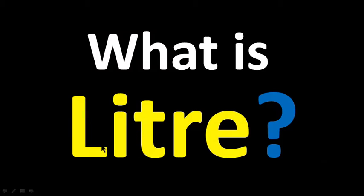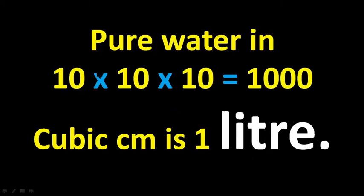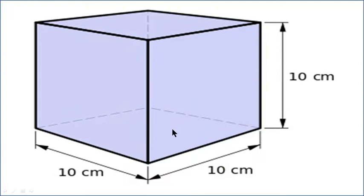We will learn what is liter. Pure water in 10 multiplied by 10 multiplied by 10, that means 1000 cubic centimeters, is 1 liter. If we observe this picture, the length is 10 centimeters, the breadth is also 10 centimeters, and the height is also 10 centimeters. That means the volume of this pot is 10×10×10, which is 1000 cubic centimeters. If we pour pure water into this pot, we will get 1 liter of water.